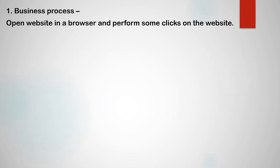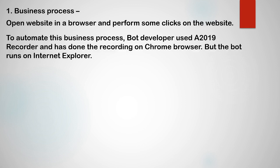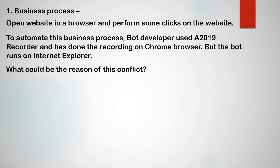Let's get started with our first question where a business process is given to open a website in a browser and perform some clicks on the website. Now to automate this business process, the bot developer used A2019 recorder and has done the recording on Chrome browser, but the bot runs on Internet Explorer. So what could be the reason of this conflict?